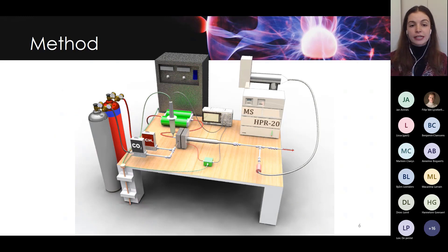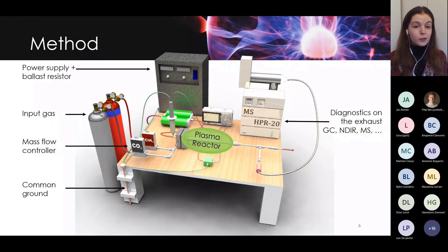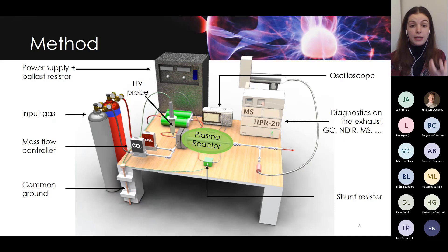Let's have a look. This is an example of an experimental setup. Of course, you have to start with your input gas, which can be pure CO2, or you can mix it, for example, with methane to do dry reforming. This gas then flows through a plasma reactor, which can be any kind of plasma reactor. We have many different types in our lab and all of them have their advantages and disadvantages. And then in our group, we typically do some diagnostics on the exhaust, like gas chromatography, NDIR, mass spectrometry, etc. Then we also need some kind of power to ignite and sustain the plasma. And to monitor this power, we also use an oscilloscope coupled to a high voltage probe and a resistor to monitor this power and calculate the efficiency of the process.